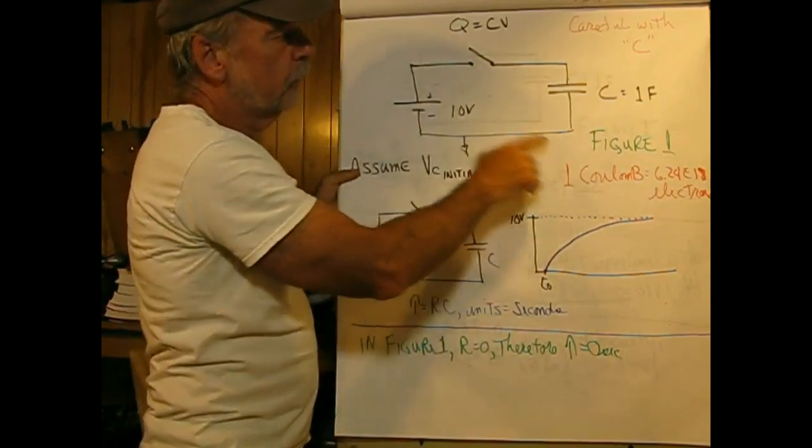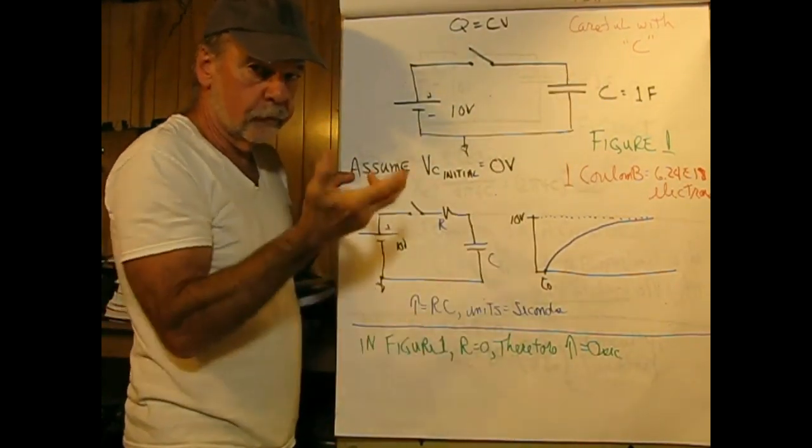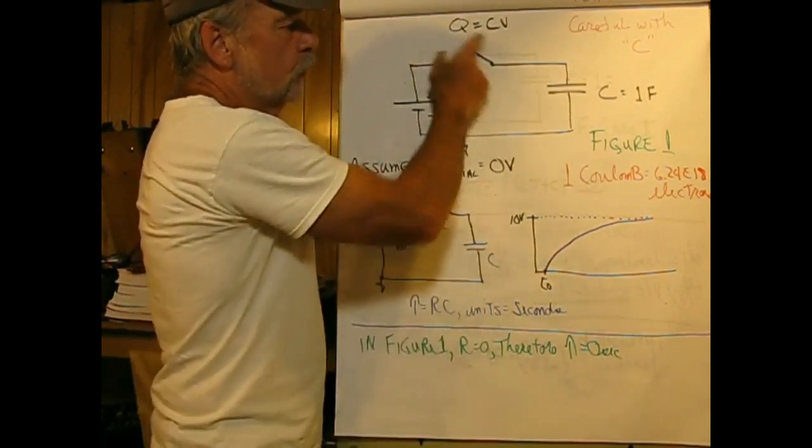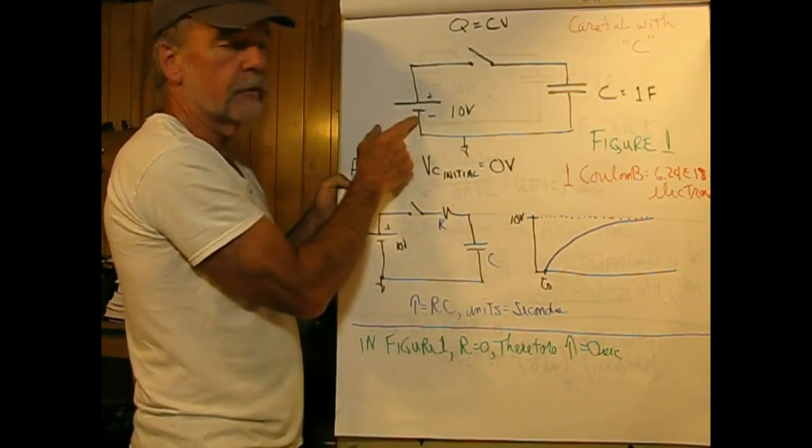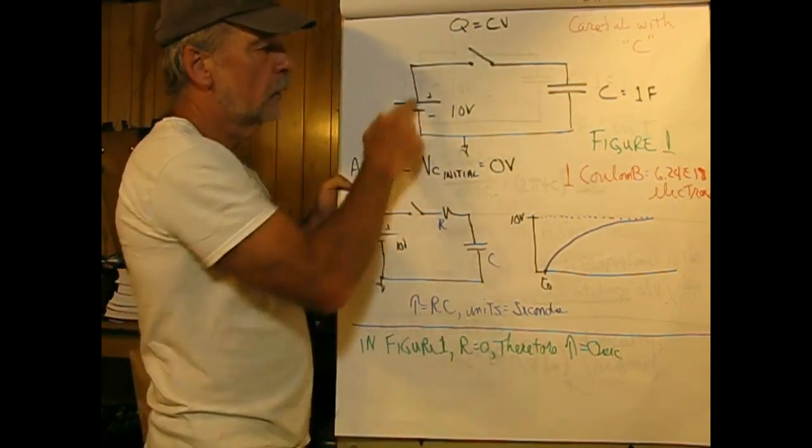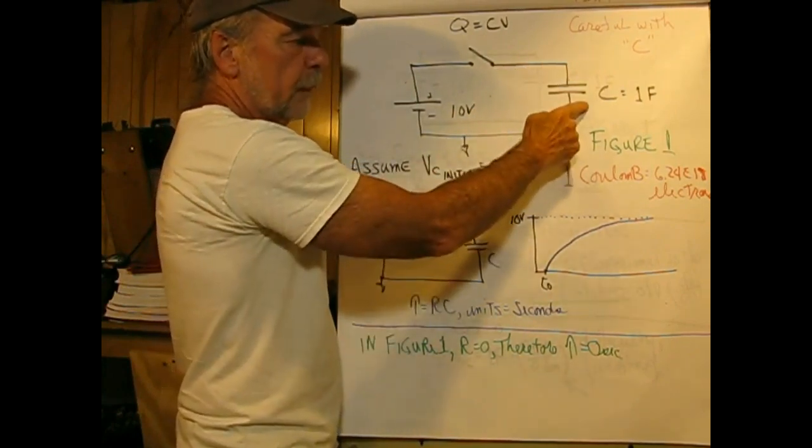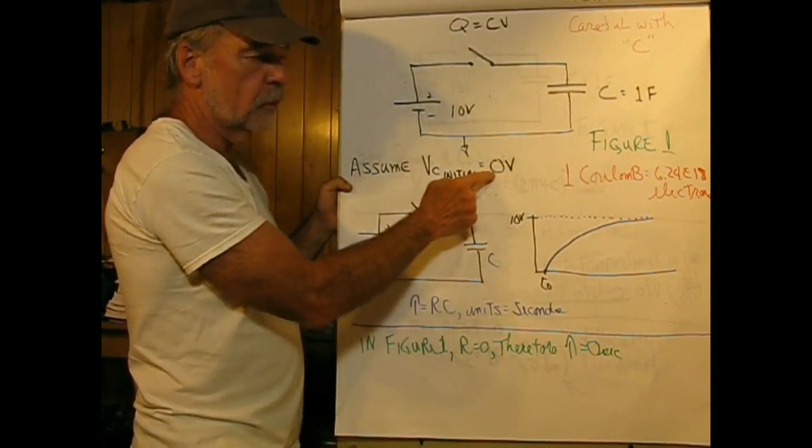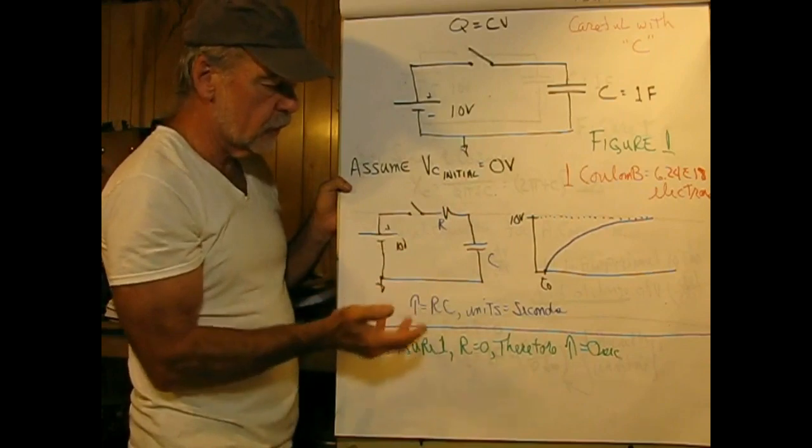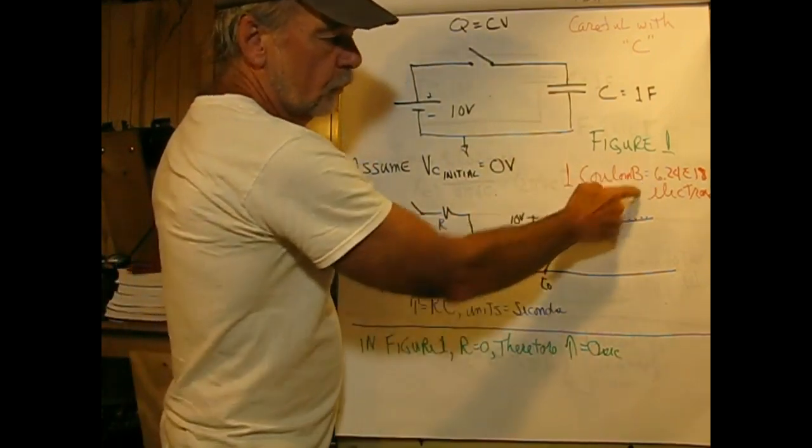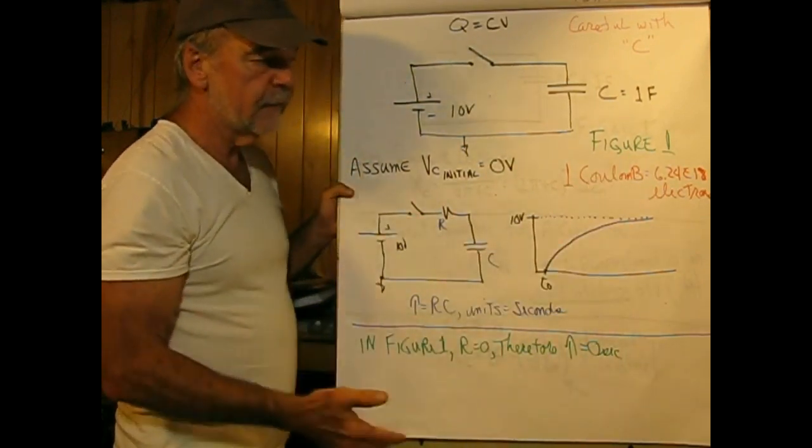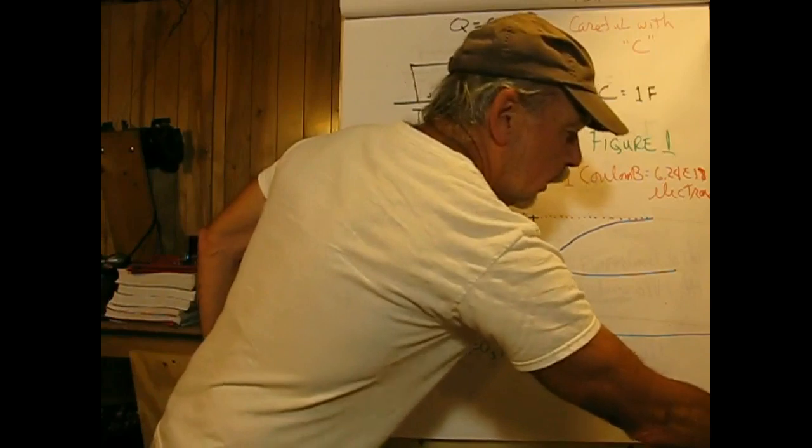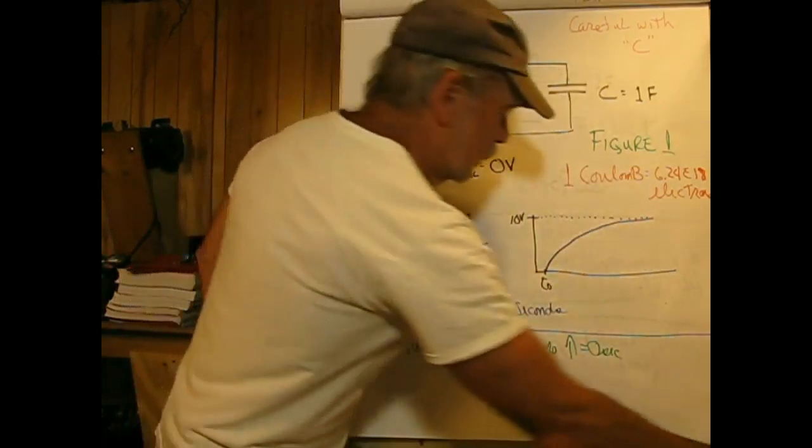Our key formula here is that the charge Q in Coulombs—be careful with C because C is capacitance and also the unit for charge—Q equals CV. The circuit we have here is a 10-volt battery, a perfect voltage source with R internal equals zero, a perfect switch with no resistance, and a perfect capacitor of one farad for easy math. Throughout this, assume VC initial equals zero volts. One Coulomb as a refresher equals 6.24 times 10^18 electrons—not electrons per second, that's current flow—just electrons, a collection of electrons on a metal surface.